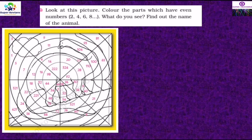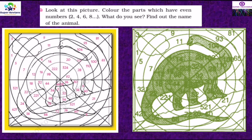Now it is time for mathematics. Look at the picture and color the parts which have even numbers: 2, 4, 6, 8, 10, 12, 14, 16, 18, 20, 22, 24, 26, 28, 30 and onward. You have to color the even-numbered parts and find out the name of the animal. I have made it colorful for you — you can see it's a dinosaur! So this activity is for you.